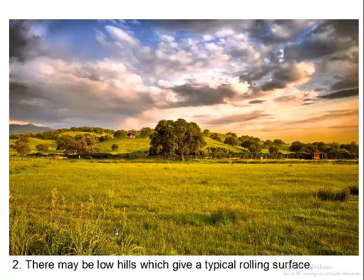Secondly, there may be low hills which give a typical rolling surface. Plains are also undulating — it is not that a lowland should always be very flat or level. Sometimes there may be bumps and small hills which give it an undulating or rolling surface. That is another characteristic of a Plain.